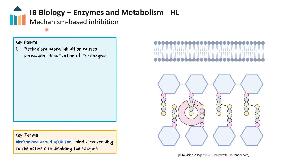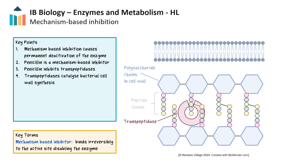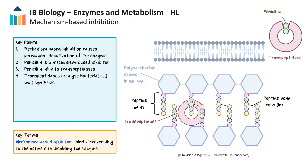Mechanism-based inhibition occurs when an inhibitor binds irreversibly to an enzyme, leading to a chemical change that permanently deactivates it. Penicillin is a well-known example of a mechanism-based inhibitor. Penicillin inhibits transpeptidases, enzymes that catalyze bacterial cell wall synthesis. Bacterial cell walls are composed of peptidoglycan containing polysaccharide chains stabilized by peptide chains. Transpeptidases function is to cross-link the peptides to add stability to the cell wall. Penicillin binds to the enzyme, creating an irreversible enzyme-penicillin complex, making bacterial cell walls weak and inhibiting bacterial growth and reproduction.